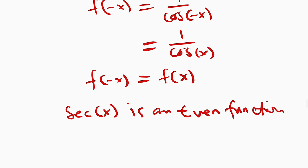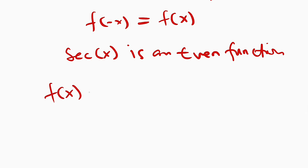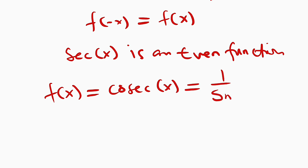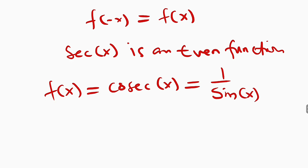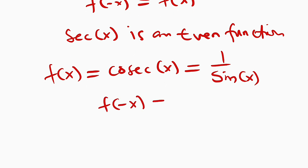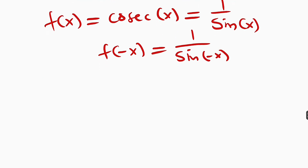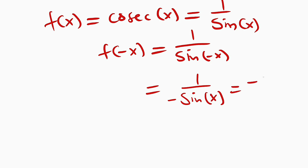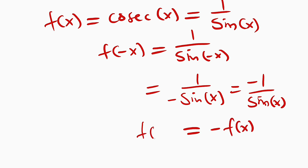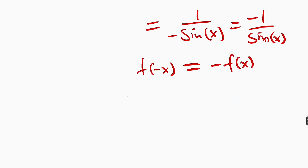Now let us test for cosecant x. You know cosec x is the same thing as 1 over sin x. So let's substitute x equal to negative x: f of negative x is the same thing as 1 over sin of negative x. Sine of negative x is the same thing as negative sin x. So this is 1 over negative sin x, which we can write as negative 1 divided by sin x. And this is just the same thing as negative the original function. Hence we say that cosecant x is an odd function.